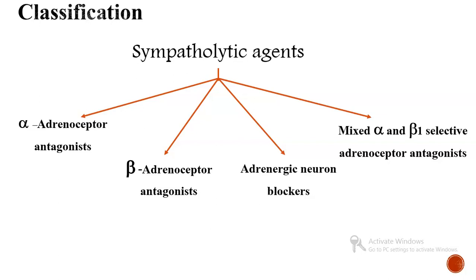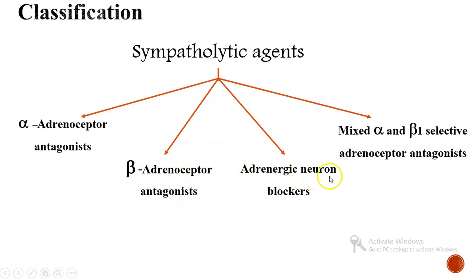Now let us look at the classification of sympatholytic agents. It is classified into four types: first, alpha adrenoceptor antagonists; second, beta adrenoceptor antagonists; third, adrenergic neuron blockers; and fourth, mixed alpha and beta-1 selective adrenoceptor antagonists.